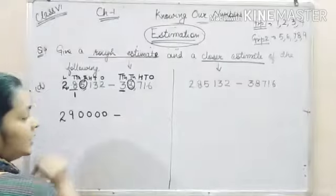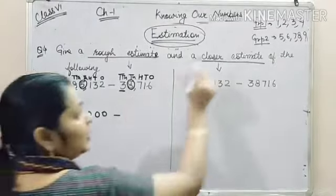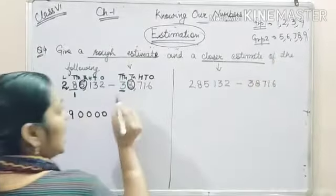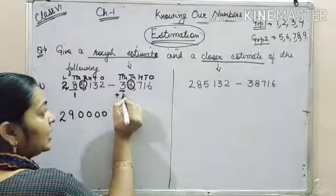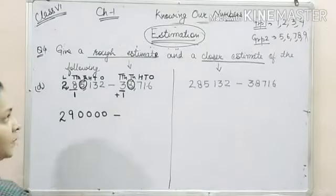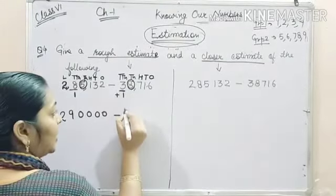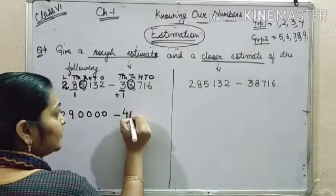Here, 8 is the digit to be checked and 8 belongs to group 2. Again, we will add 1 to 10,000 place. So it becomes 40,000.